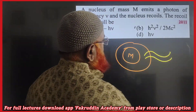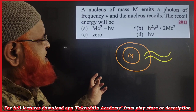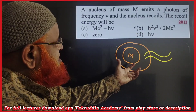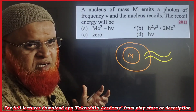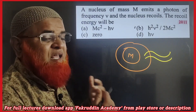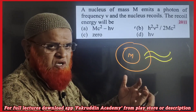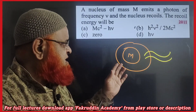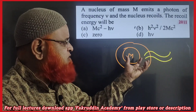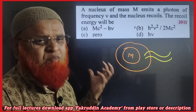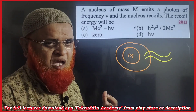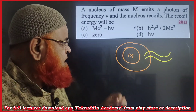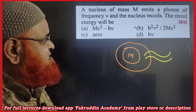When the nucleus emits a photon, it recoils back — just like a gun and bullet. If a bullet comes out, the gun recoils back. Similarly, when a photon is released, the nucleus also recoils back.